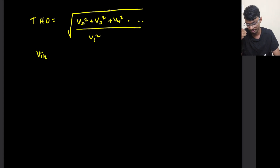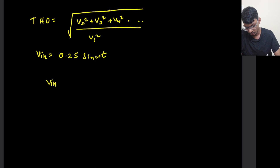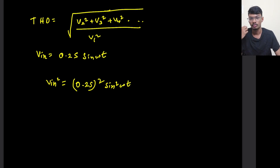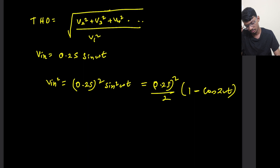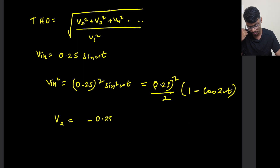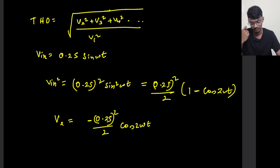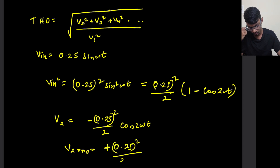The fundamental input is V_in = 0.25·sin(ωt). V_in² = (0.25)²·sin²(ωt) = (0.25)²/2 · (1 − cos(2ωt)). This shows that only a second harmonic is present in the output, with the harmonic component being −(0.25)²/2 · cos(2ωt). The RMS value V₂ = (0.25)² / (2√2).